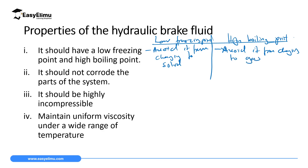Gases are not suitable as hydraulic fluids because when pressure is applied to gases they decrease in volume — they compress — and we don't want a substance that behaves like that. Another property is that the fluid should not corrode the parts of the system; if it corrodes the parts, there will be leakage in the system and pressure will not be transmitted equally. The third property is that it should be highly incompressible.